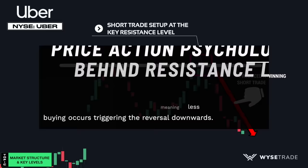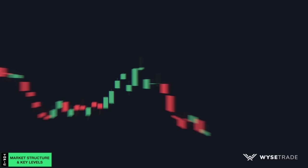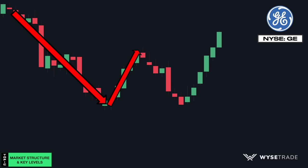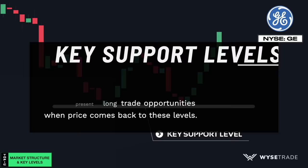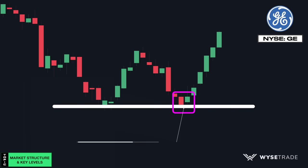From a price action standpoint, when price comes up to a recently formed resistance level, it is deemed expensive within that particular moment in time, meaning less buying occurs, triggering the reversal downwards. This is the General Electric or GE stock. Price moves down before reversing drastically, making this a key support level. Support levels are areas where price can possibly reverse upwards from. So as price came back down, you had a great long trade setup right at the support level that produced a winning long trade.